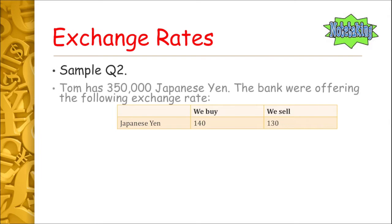Now for sample question two, Tom has 350,000 Japanese yen. The bank offers: we buy 140 Japanese yen and we sell 130 Japanese yen. This means if you have Japanese yen, the bank will buy it off you at 140 yen per euro; and if you have euros and want yen, they will sell you yen at 130 yen per euro.